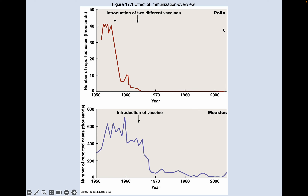Looking at the top graph for polio: the x-axis shows time from 1950 to 2000, and the y-axis shows reported cases in thousands. Polio was around 30,000 to 40,000 cases a year in the U.S. before the first vaccine. With the introduction of the first polio vaccine, cases dropped to about 5,000 a year — incredible. Then with a second vaccine in the mid-60s, polio cases are near zero, tapering even lower toward 2000. Polio is now very rare, but used to be fairly common.